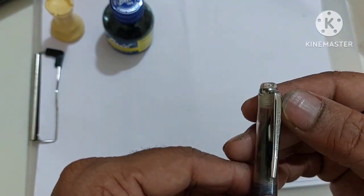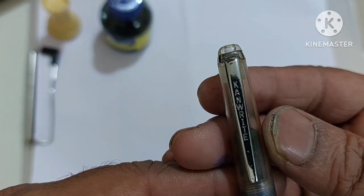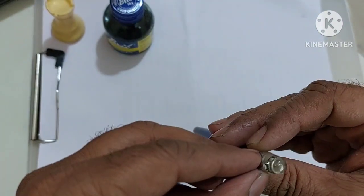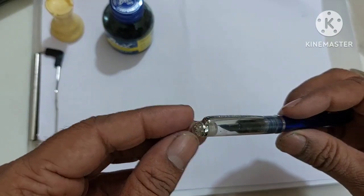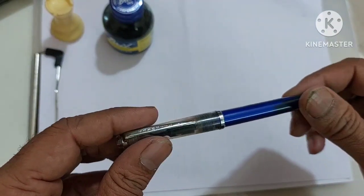You can see the cap has a silver band at the end and a silver clip. Very nice clip and it has CanWrite engraved on the clip. As you can see the finial is just plain plastic, totally plastic pen.